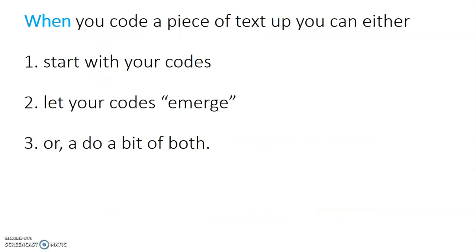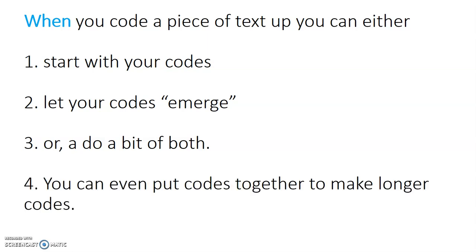When you code up a piece of text, you can do it in several ways. You can start with your codes, or you can let your codes emerge — that means you read the text and then decide what the code should be — or you can do a bit of both. In fact, you can even sometimes put codes together to make longer codes. There are several ways that you can do your coding, so the most important thing to remember is to make it clear to your reader which method you've used.